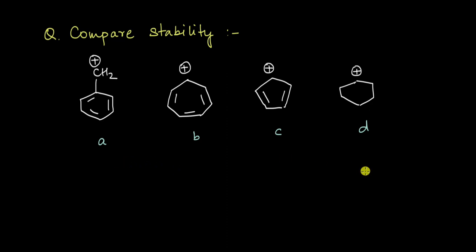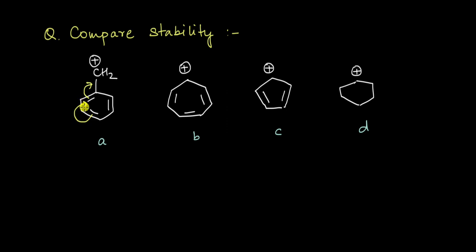Once again, we have different cations and we need to compare the relative stability of these cations. If you look at this particular cation, it's a benzyl cation. There's an empty orbital on this carbon atom that's directly attached to a double bond, so we can have resonance out here. These pi electrons can move over here and we are going to have new resonating structures, and then these pi electrons can again shift. So this cation is stabilized via resonance.